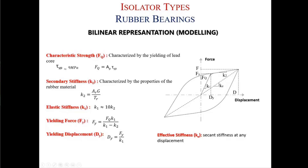To calculate yield force, you need the characteristic strength — the force that intersects the y-axis — which depends entirely on the lead plug properties. If you know the area of the lead plug and multiply it by the shear strength of the lead, you can calculate the characteristic strength. From similarity equations you can find the yield force, and if you know the yield force and initial stiffness, you can calculate the yield displacement, giving you the full bilinear representation for software analysis.